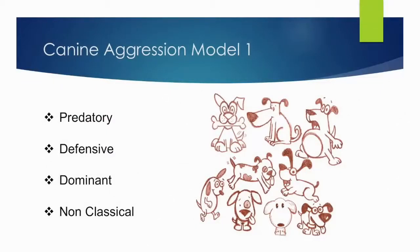The base model for canine aggression normally has three parts, but recently we've added a fourth. Basically, you've got predatory, which we'll discuss mostly tonight, defensive, dominant hierarchical, which is actually very small but still needs to be there, and non-classical, which means we don't have a definition for it — things we've seen that don't fit the classic models that exist.